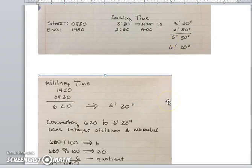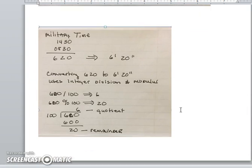However, we need to be able to convert 620 to hours and minutes using integer and modulus division in programming. We would take 620 divided by 100, which gives us 6 hours, and 620 modulus 100 gives us 20 minutes.